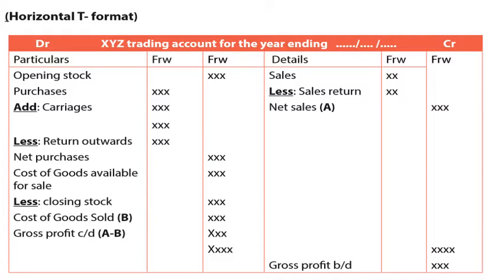We then get the cost of goods available for sale, which is opening stock plus net purchases. Then we take cost of goods available for sale, less closing stock, and subtracting gives us the cost of sales — call it B. That is how we get our gross profit figure from the debit side.